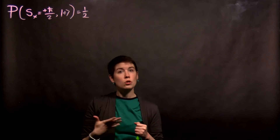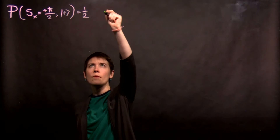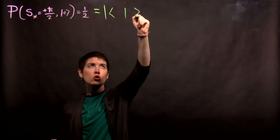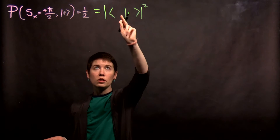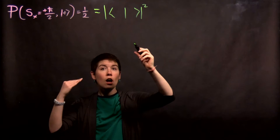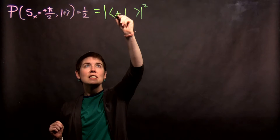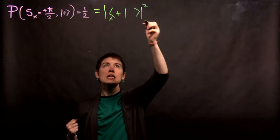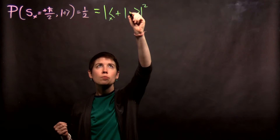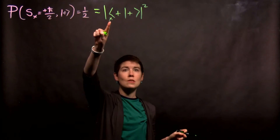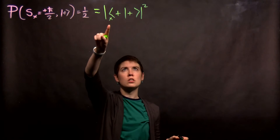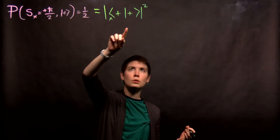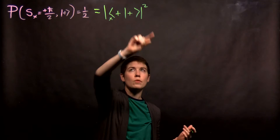We then want to write this in our Bra-ket notation. In this case, we have our measurement on the left, which is going to be spin up in x, and we have our input state — our initial state on the right, our ket state — and that's spin up. Notice that this x means in the x direction, and when it's the z direction, that's the basis we're working in, so we don't need to actually write anything there.